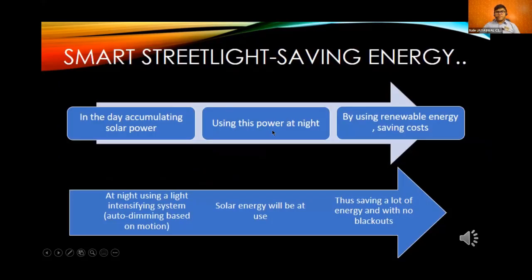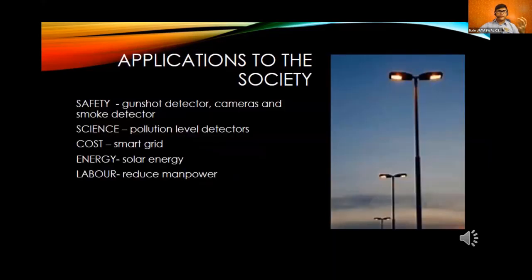On the streets we will use smart street lights with solar panels and an automatic light-intensifying system to save energy. These will have five applications to society: safety, science, cost, energy, and labor. For labor, the Internet of Things will alert authorities when a street light stops working.